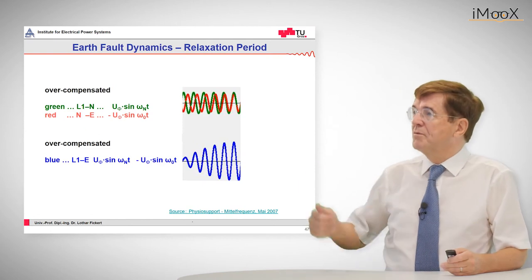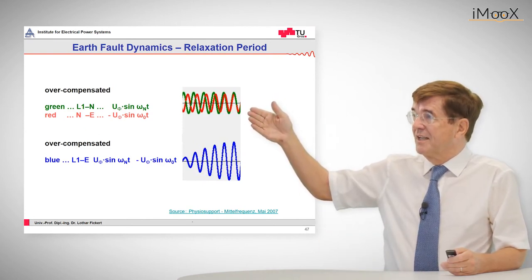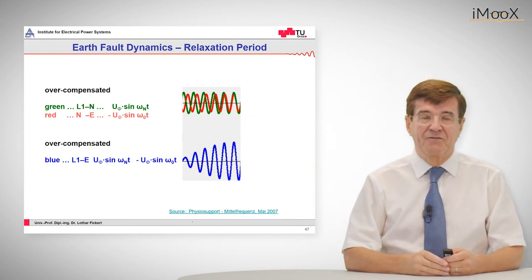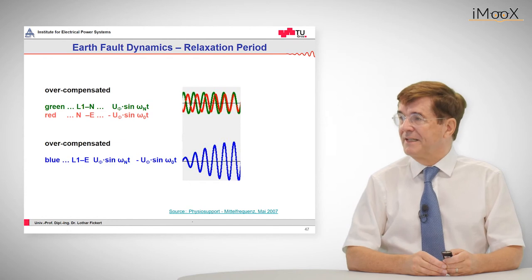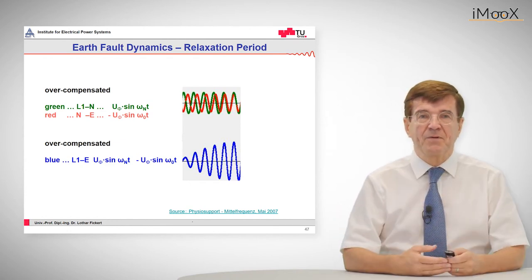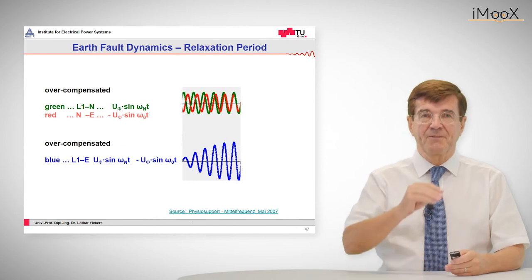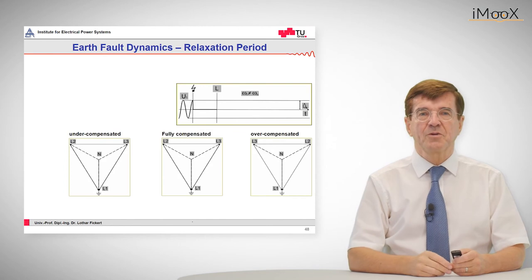And this results in an overlap of two oscillating processes. So one process in such an overcompensated network is the oscillation of the neutral in red and the phase to neutral voltage, which is in green. So if these are superimposed, we have a beat. So this is a voltage shape that increases, decreases, increases, decreases. And this is what we have seen.